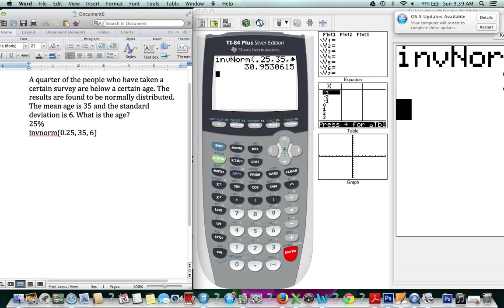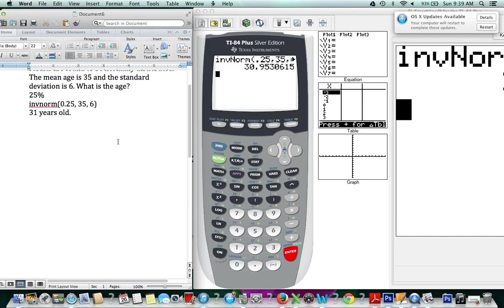So, our answer is 30, 31. We can round up. 31 years old. Now, does that make sense according to our graph? Let's see. 31 years old.